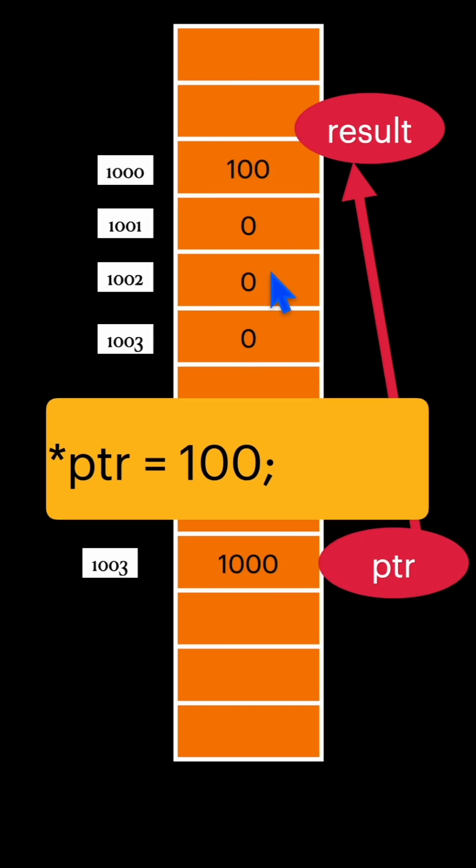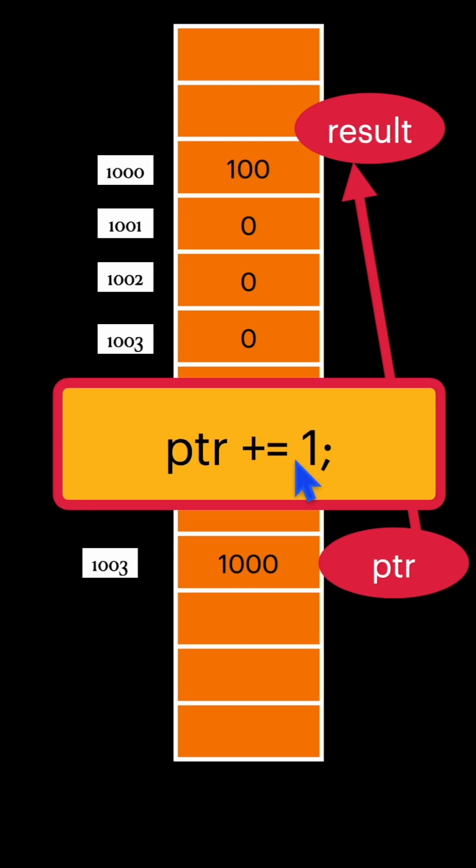Because this is an integer pointer. And if you increment this pointer itself, then it will not point to this variable. And because this is an integer pointer, so now it will be pointing to address 1004.